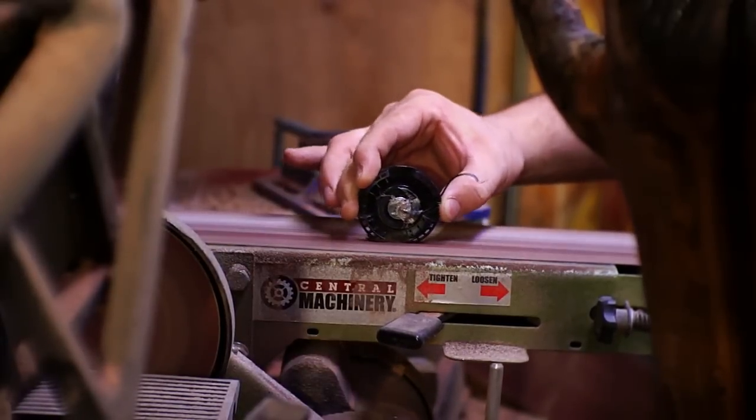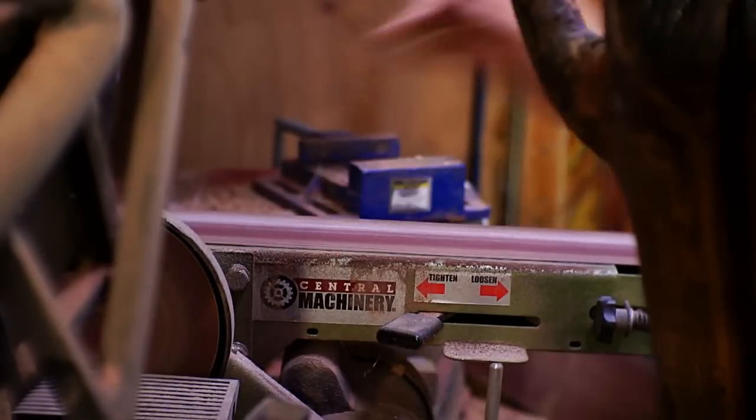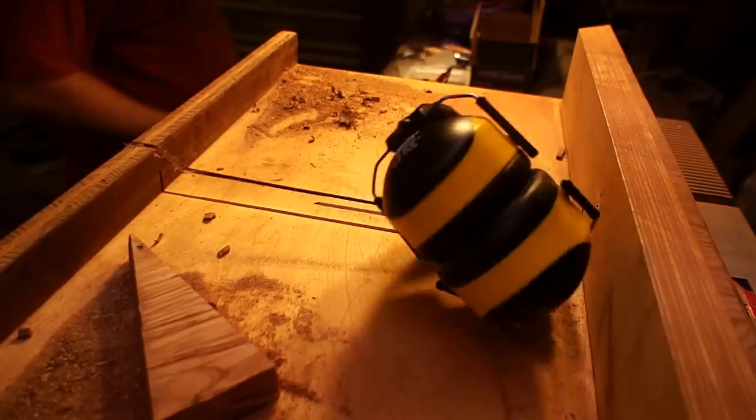So off-camera I tried to hacksaw them a little bit. It was just kind of slipping around and I figured it might be a little easier to just throw them on the belt sander. And that worked really well to get the plastic down.